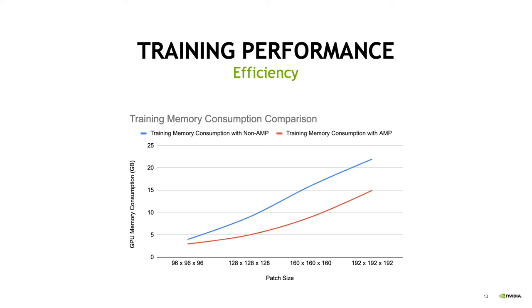Another benefit of using AMP is reduced GPU memory consumption. Here we compare the training memory consumption of using AMP versus without AMP under different patch sizes. Training without AMP always consumes more memory compared to training with AMP. Furthermore, if we increase the patch size during training, the memory reduction becomes larger and larger, so users can increase the patch size to gain even greater memory reduction.